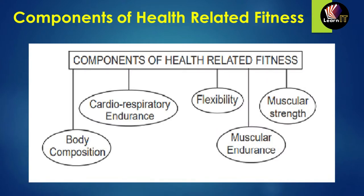Finally, the components of health-related fitness are divided into five categories: body composition, cardiorespiratory endurance (how the cardiovascular and respiratory systems work together), flexibility (how body parts move), muscular endurance (how energy is used by muscles), and muscular strength.